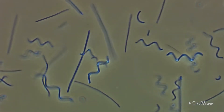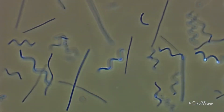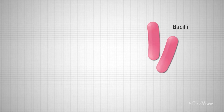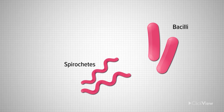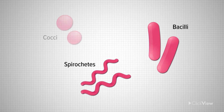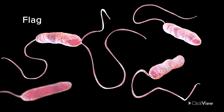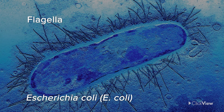Bacteria and archaea have a range of different body shapes and forms. Some are shaped like a rod, corkscrew, or spiral, and others are ball-shaped. Some bacteria and archaea have appendages, such as a flagellum, which is like a tail, or a number of flagella, to enable them to move.